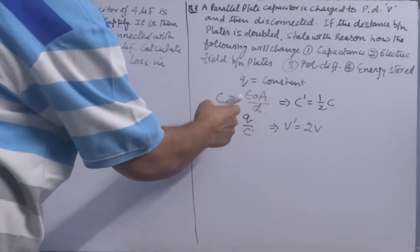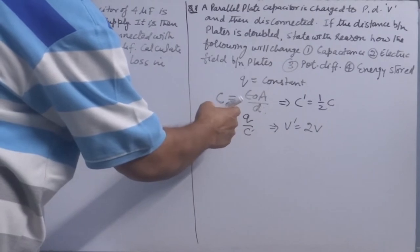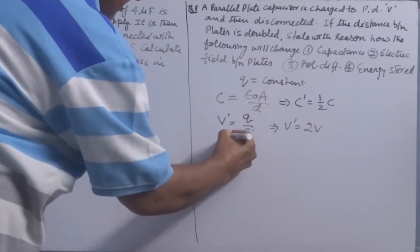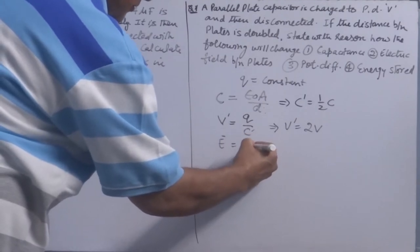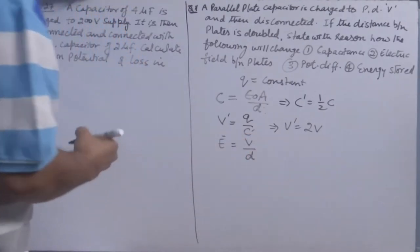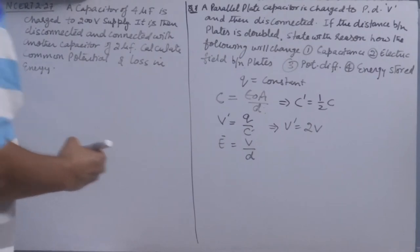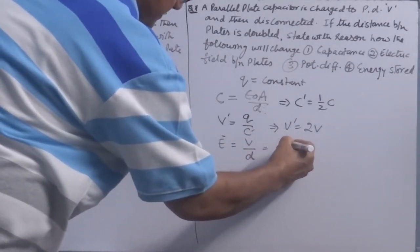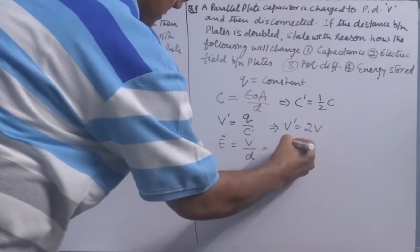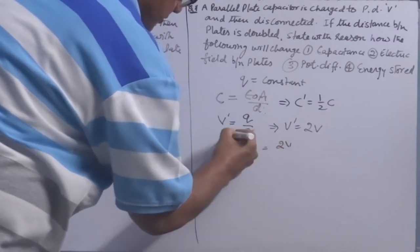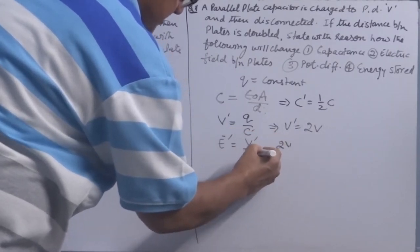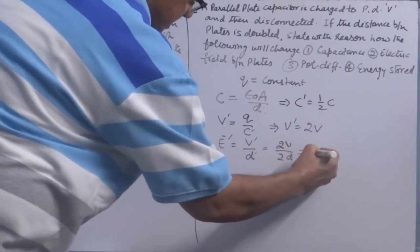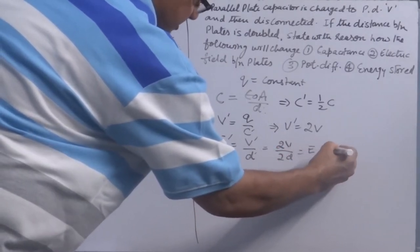Electric field E = V/d. The new electric field is 2V over 2d, so the electric field does not change.